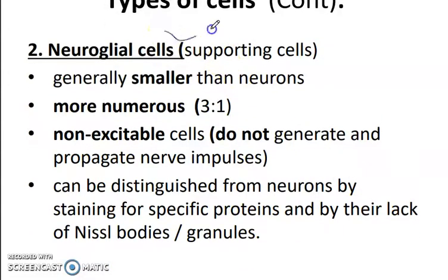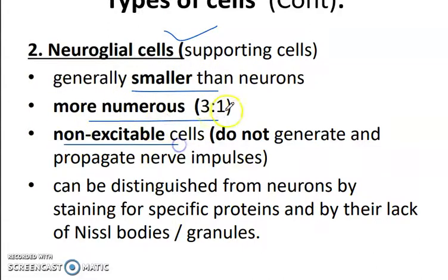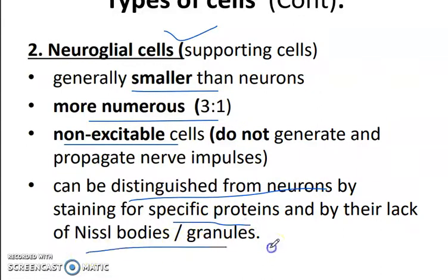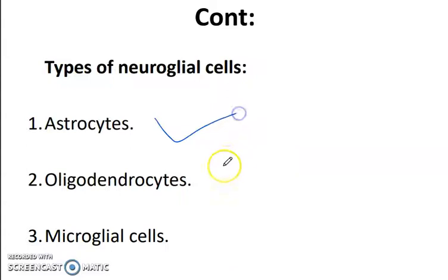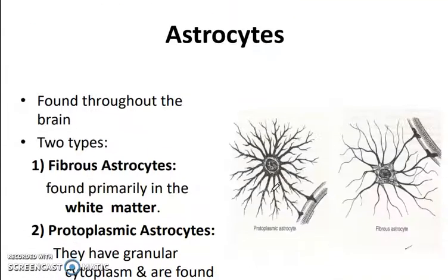Neuroglial cells are the supporting cells. They are small, numerous, and non-excitable, and can be distinguished from neurons by staining specific proteins and their lack of organelles. Types of neuroglial cells are astrocytes, oligodendrocytes, and microglial cells.